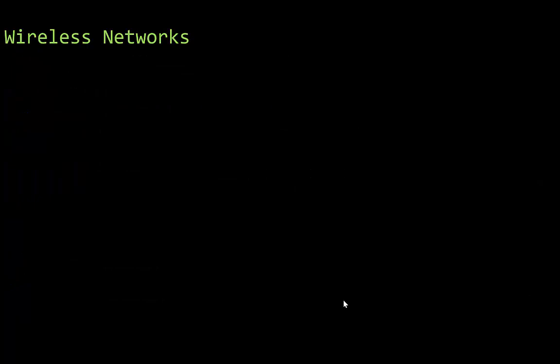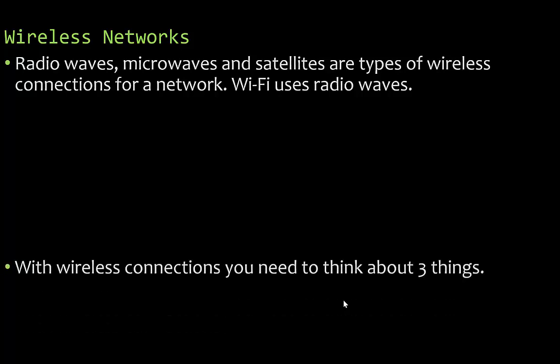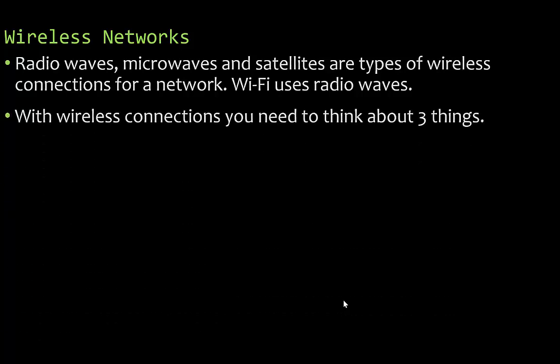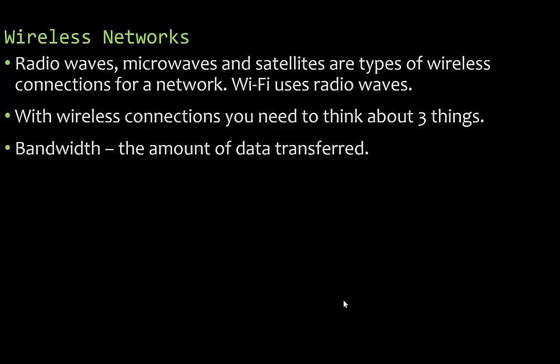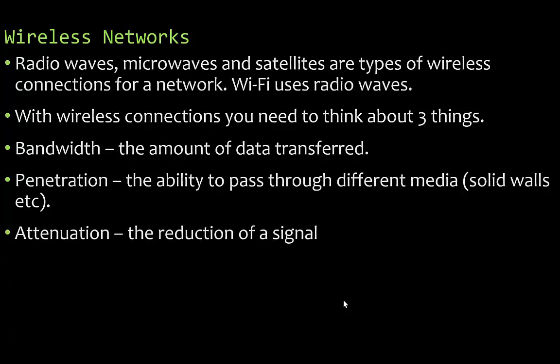Wireless networks use radio waves, microwave satellites as types of wireless connections. Wi-Fi uses radio waves. With wireless connections you need to think about three things: bandwidth — how much data can be transferred; penetration — the ability to pass through different media like drywall or concrete walls; and attenuation — the reduction of a signal. Infrared, for example, has low attenuation but it can be stopped by walls and even rain, so infrared is best for indoor use only — your cable remote is an example of infrared.